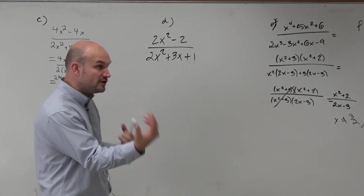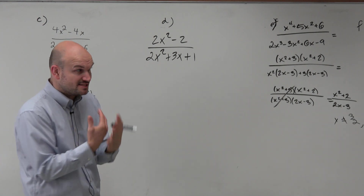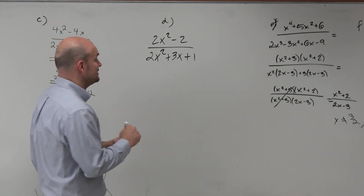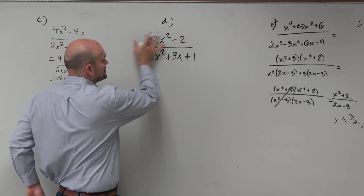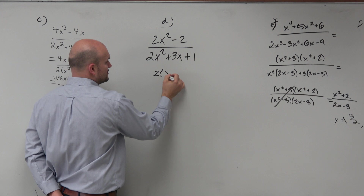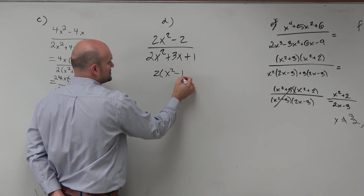Therefore, the first step in our process is always just to factor, factor, factor. So we can factor out the 2 here, and we get a 2 times x squared minus 1.